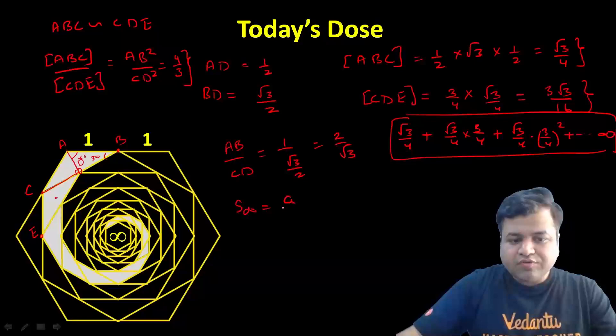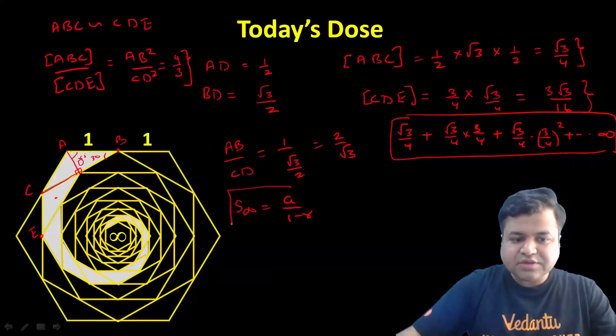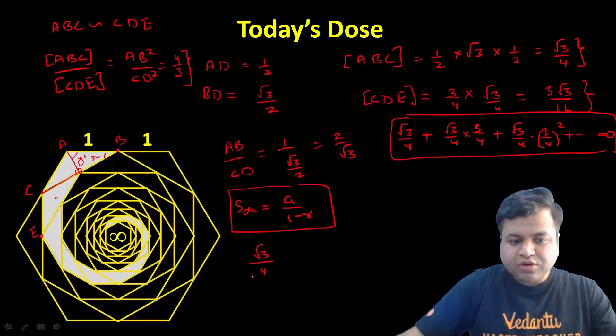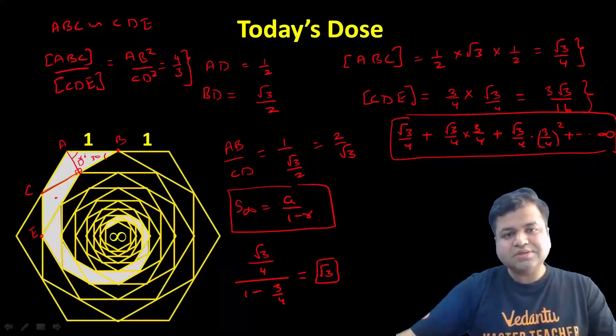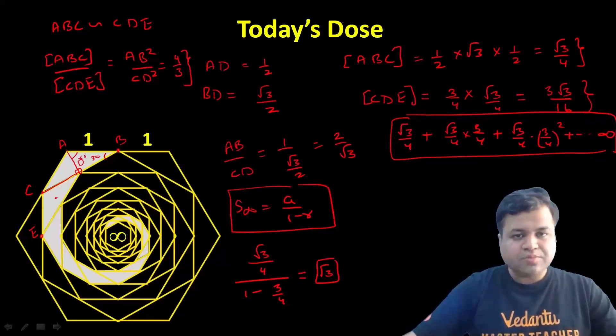That is simply A upon (1 minus R), where A is the first term and R is the common ratio. So its area will be root 3 by 4 all upon (1 minus 3 by 4), which equals root 3 by 4 upon 1 by 4. The area of this shaded portion is simply root 3. I hope you have understood.